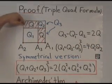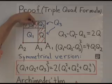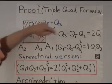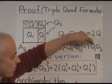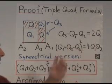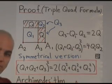But Q squared is, by our lemma, Q1 times Q2. So on the right-hand side, we get 4Q1Q2. And that is the triple quad formula, and that's the proof.